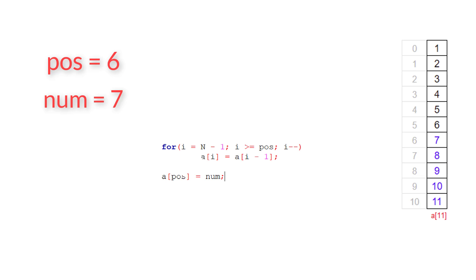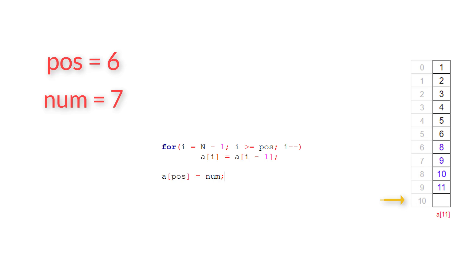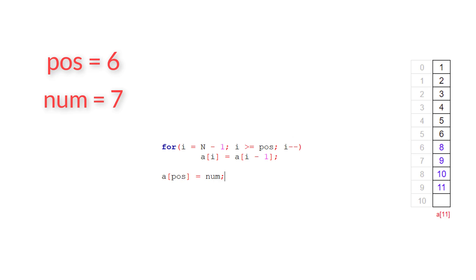Let me bring up the code snippet. The variable i is initialized to the last index, and the for loop iterates until i is greater than or equal to the user-entered position. For each iteration, the i value decrements by 1. Inside the for loop, we shift the previous element to the next position. After the loop completes, we insert the new number at the position entered by the user.